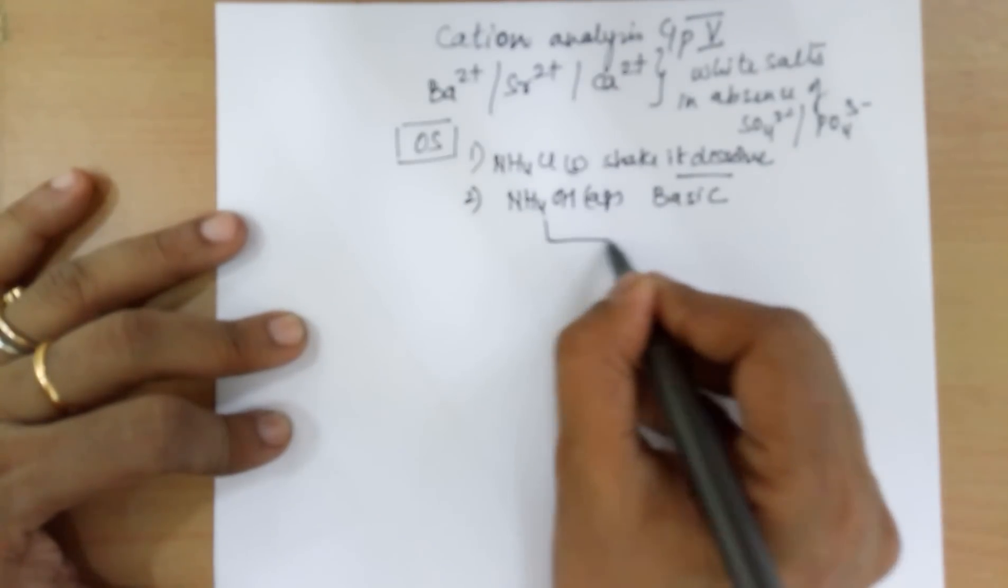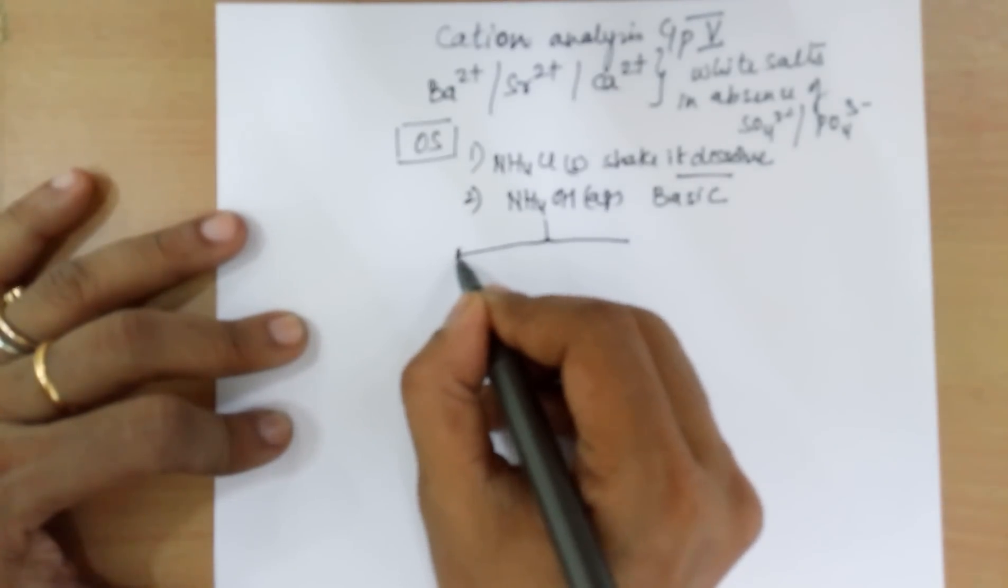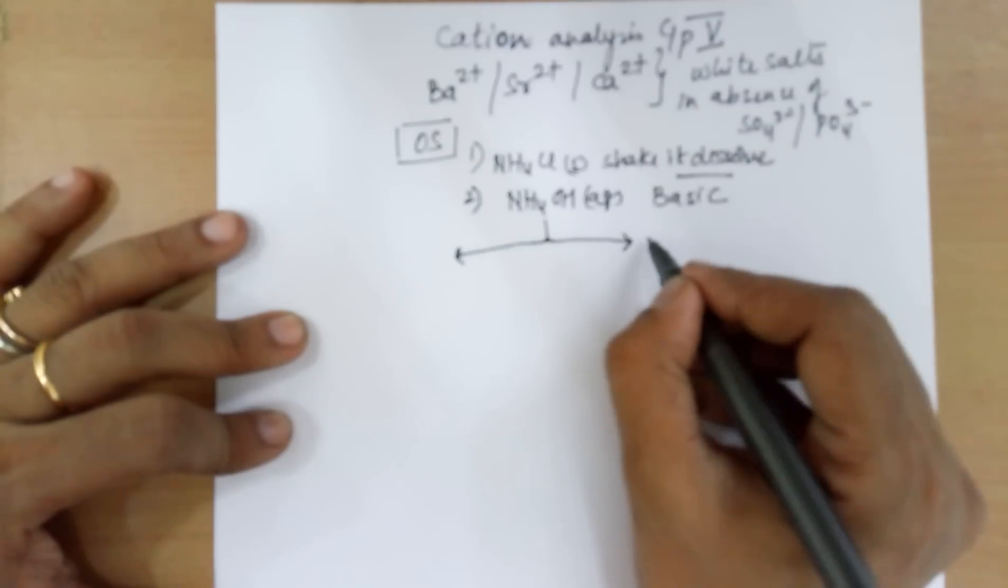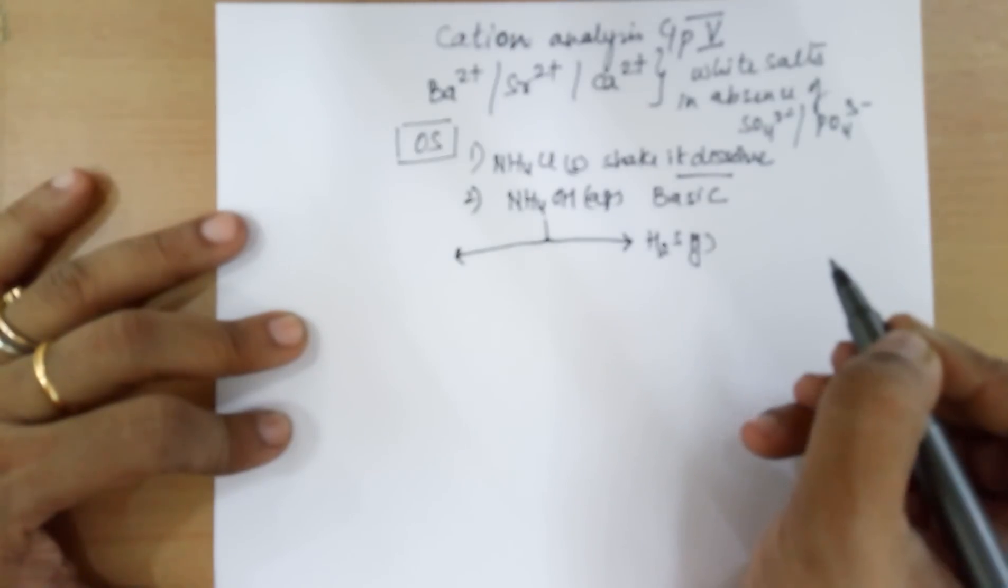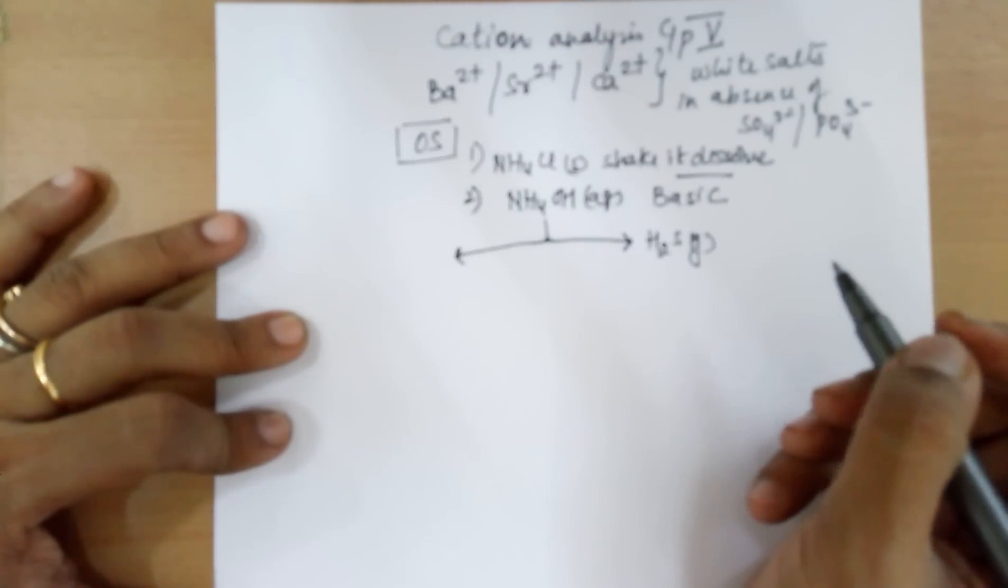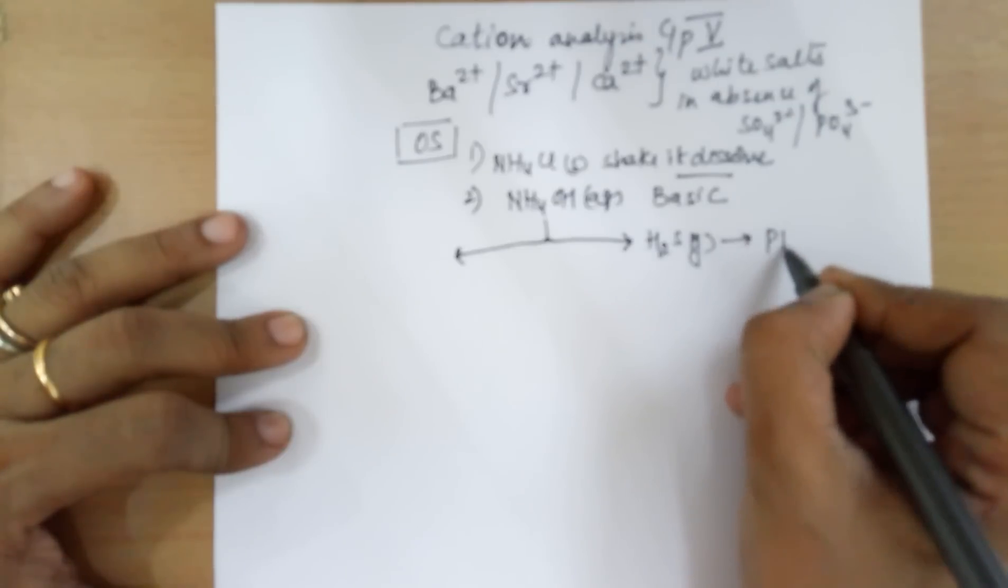At this point, you can divide the solution into two. To one part, add H2S gas, pass it through the solution, in case you get a PPT.